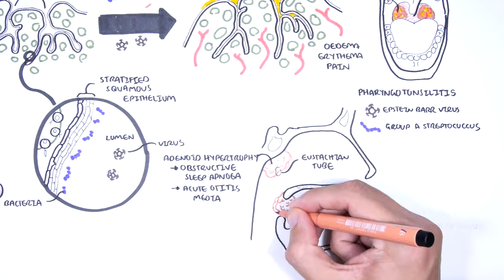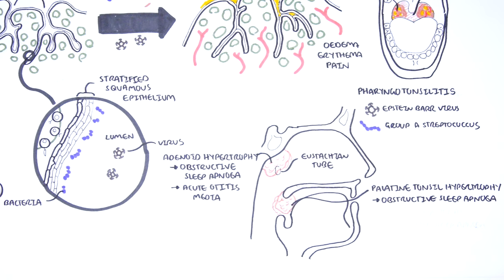Palatine tonsil hypertrophy can also result in obstructive sleep apnea. Enlargement of these lymphatic tissues can result in mechanical narrowing obstruction of the upper airway. So when a child sleeps, the soft tissue of the pharynx usually relaxes and can further occlude the already narrowed airway.